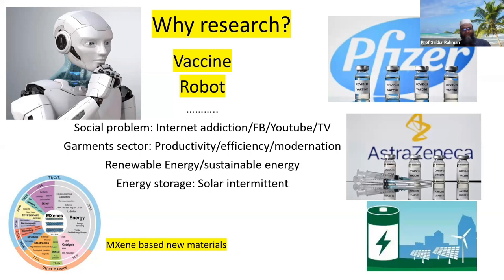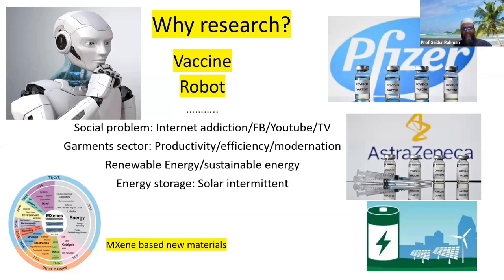We know the robot — that also came from research. Social problems like internet addiction to Facebook, YouTube, and TV are creating problems for our children. If we do research into why this is happening, we can find solutions. In the garment sector, productivity, efficiency, and modernization are important problems that can be solved by research. Renewable energy is intermittent in nature, so the solution is energy storage — that's why I'm also working in this area. New materials like graphene have high electrical conductivity and surface area, improving properties and applications tremendously while being cost-effective.